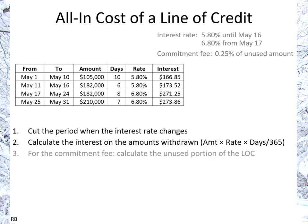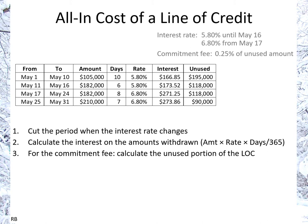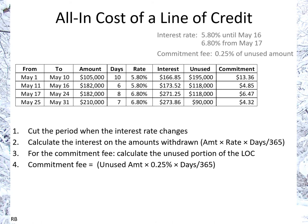For the commitment fee, we need to figure out the unused portion of the line of credit. We had $300,000 as the approved amount, so the unused portion is the difference between what was actually used and $300,000. Starting with $105,000, that would be $300,000 minus $105,000, giving us $195,000. The commitment fee is calculated as the unused amount times 0.25% times the days divided by 365.